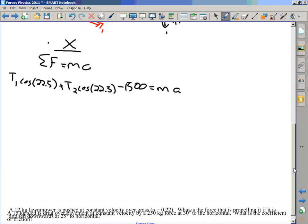Well, I know what T1 and T2 are. Horses each pull with 1000 units. 1000 cosine 22.5 plus 1000 cosine 22.5 minus 1500 equals what's the mass of the stump? 21.